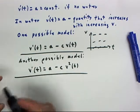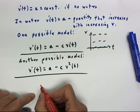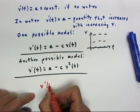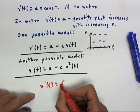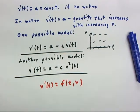And both of these equations are of the same general form, where, again, v prime of t is some function of t and v.